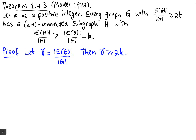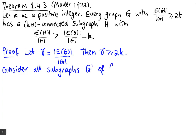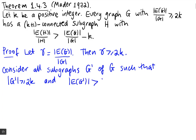We're going to focus on a set of subgraphs of G with the following property. We consider all subgraphs G′ of G such that: firstly, they need at least 2k vertices, and secondly, the number of edges of G′ should be strictly bigger than γ times the number of vertices of G′ minus k. We'll call that property star.